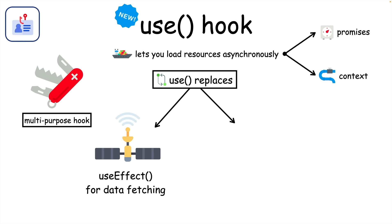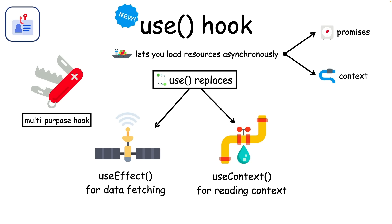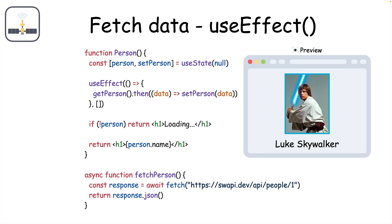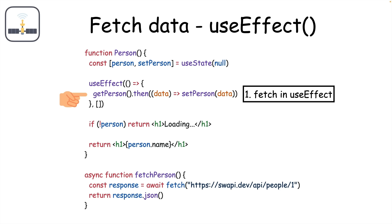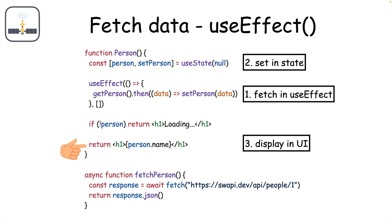It can replace useEffect for things like data fetching, and it can replace useContext for reading context data. In the past, if you wanted to fetch data from an API with useEffect, you first needed to make the API request inside useEffect, then put that returned data somewhere — usually in a state variable with useState — and finally display that updated state in the UI after handling loading and error cases.